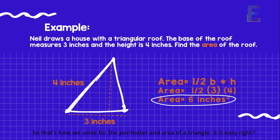So that's how we solve for the perimeter and area of a triangle. It is easy, right? But before I end this video, let me summarize first the formulas we used for today's topic so that you won't forget it.